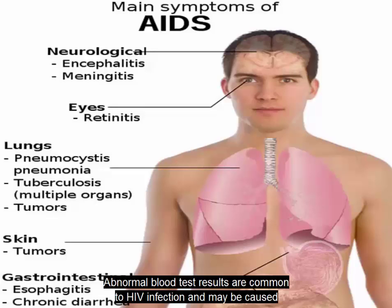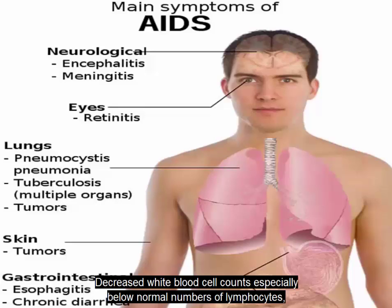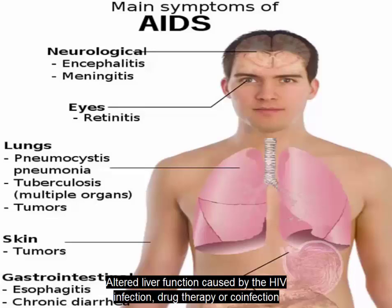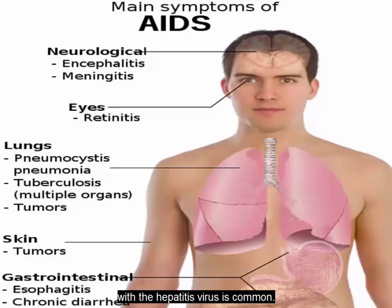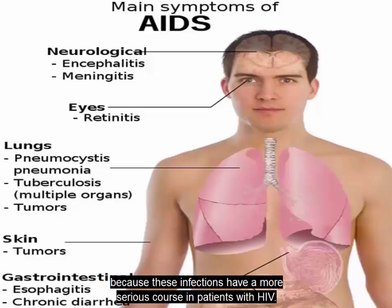Abnormal blood test results are common to HIV infection and may be caused by the HIV, opportunistic diseases, or complications of therapy. Decreased white blood cell counts, especially below normal numbers of lymphocytes, neutrophils, low platelet counts, and anemia are often seen. Altered liver function caused by the HIV infection, drug therapy, or co-infection with the hepatitis virus is common. Early detection of co-infection with hepatitis B or hepatitis C is extremely important because these infections have a more serious course in patients with HIV.